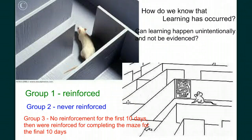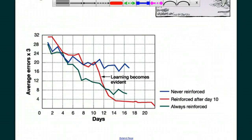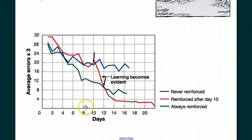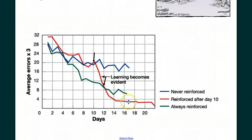What do you think happened over the next couple of days? Let's look at this graph of the data. In a two-day period from day 10 to day 12, they reduced their number of errors to equal the same proficiency in the maze as the group that had been reinforced the entire time — the green line here. They improved as much in two days as it took the always-reinforced rats over a seven-day period to make that much improvement. And eventually, this group outperformed the always-reinforced group.